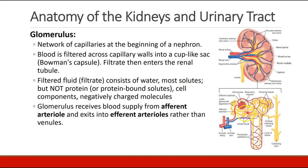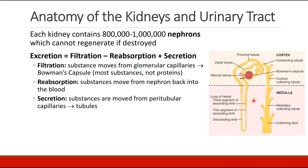The glomerulus receives its blood supply from the afferent arteriole, and blood exits into the efferent arteriole rather than into venules — a change from most capillary systems we are familiar with. Each kidney contains close to a million nephrons, and these structures cannot regenerate if they are ever destroyed.